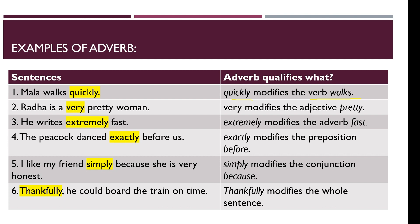The second sentence is: 'Radha is a very pretty woman.' Here, 'woman' is a noun and 'pretty' is an adjective describing that noun. 'Very' is the adverb qualifying the adjective 'pretty' — so the adverb 'very' is modifying the adjective 'pretty.' Very is an adverb qualifying adjective pretty. So adverb 'very' is qualifying — or modifying — adjective 'pretty.'